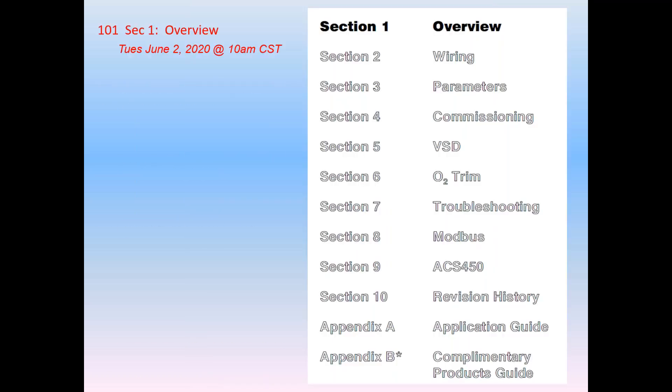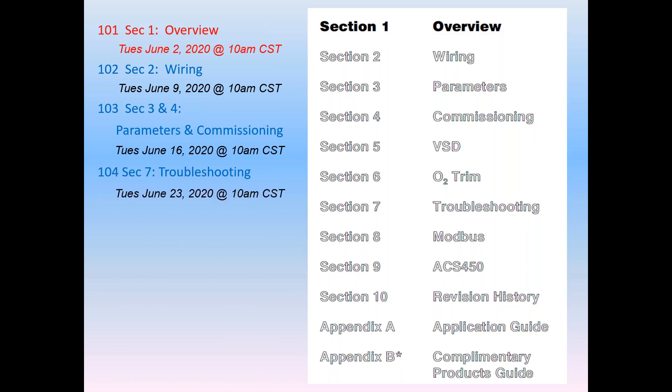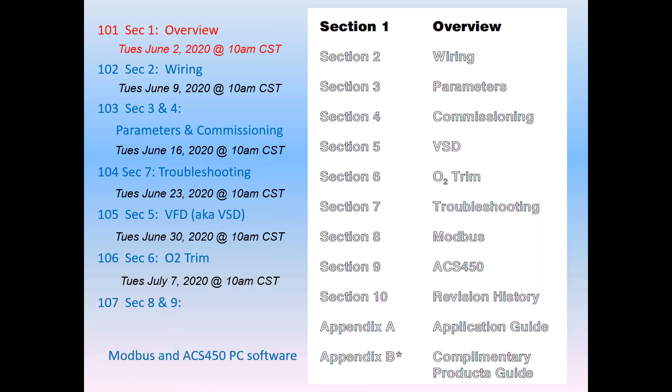As previously mentioned, this is the first in a seven-part series, and today we present the overview, and we'll cover the LMV5's features and equipment. Future webinars in the next six weeks include 102, the wiring, which would be June 9th, 103, parameters and commissioning, which would be on the 16th, 104, troubleshooting on the 23rd, 105 on the 30th with the VFD, also known as a variable speed drive. 106 is the oxygen trim on July 7th, and finally on section 7 and 8, we'll cover on July 14th the Modbus and ACS 450 PC software.